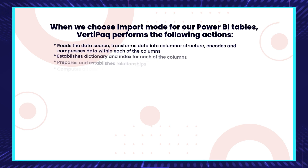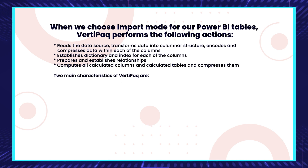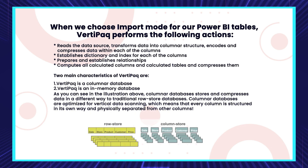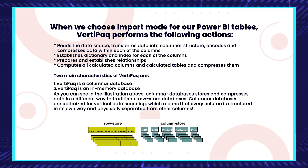When we choose import mode in Power BI, it reads, transforms, and stores the data in a columnar structure — this is why Power BI is called a columnar database. VertiPaq encodes the data within each column. Columnar databases are highly optimized, with data stored vertically so each column acts independently. A traditional row-based database searches row after row when a query is fired, whereas column store searches vertically, making data processing comparatively much faster than a horizontal row-based structure.